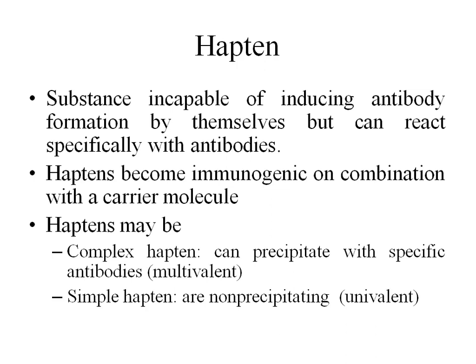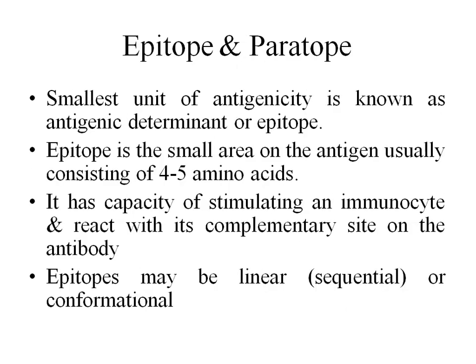Haptens can be a complex hapten, which can precipitate with specific antibodies — that is, it is multivalent. Or it can be a simple hapten, which is a non-precipitating hapten and is univalent.